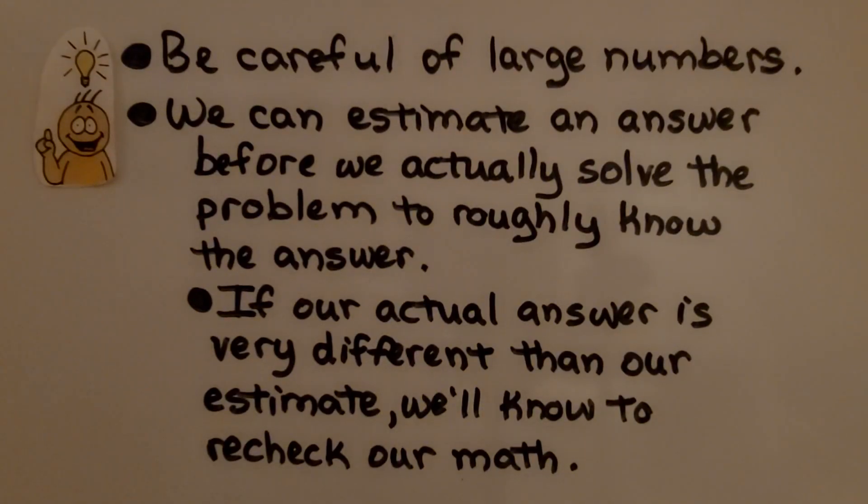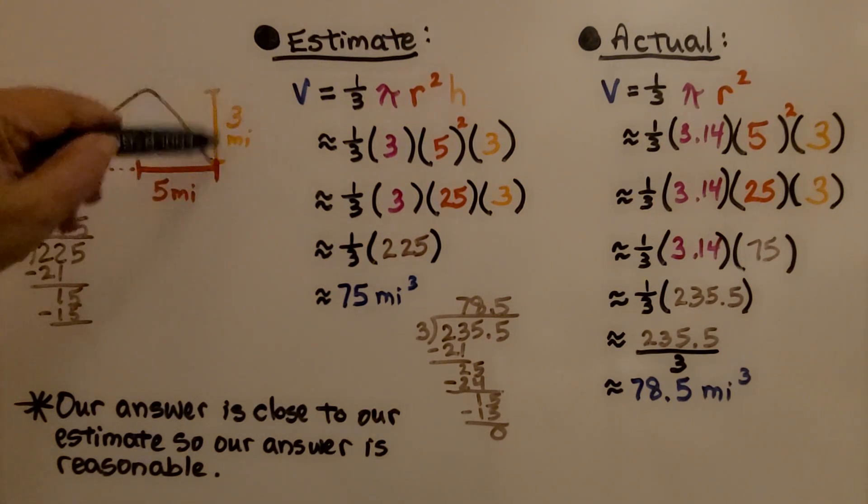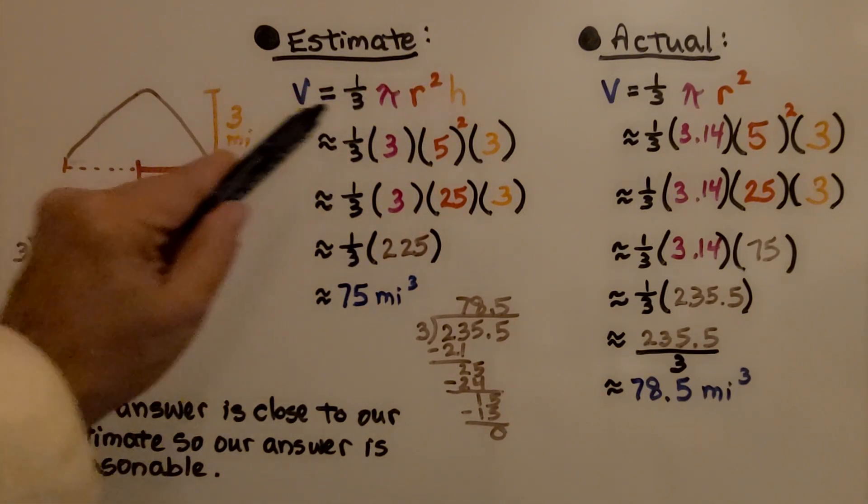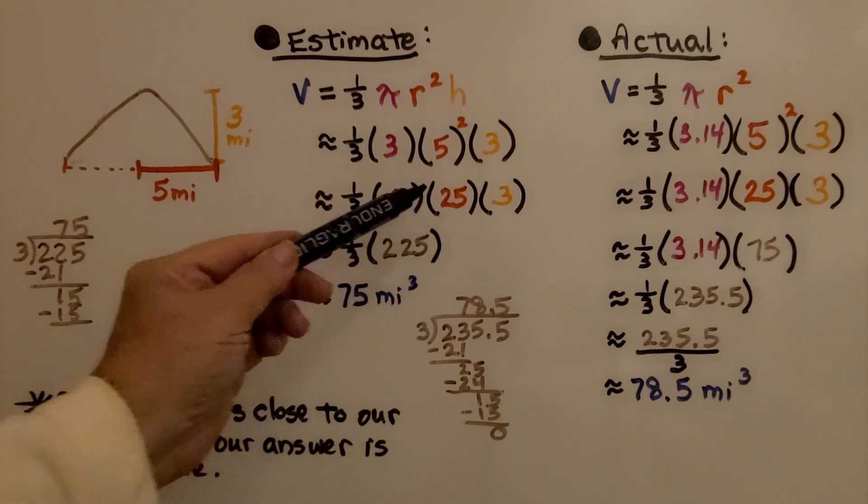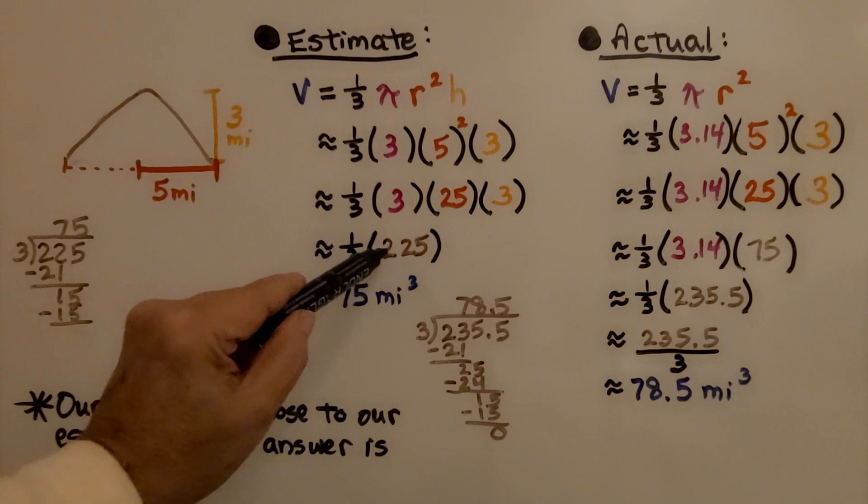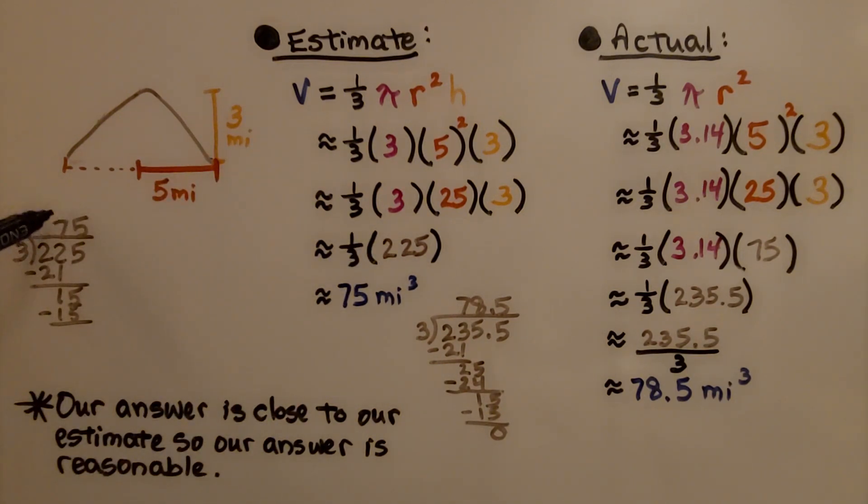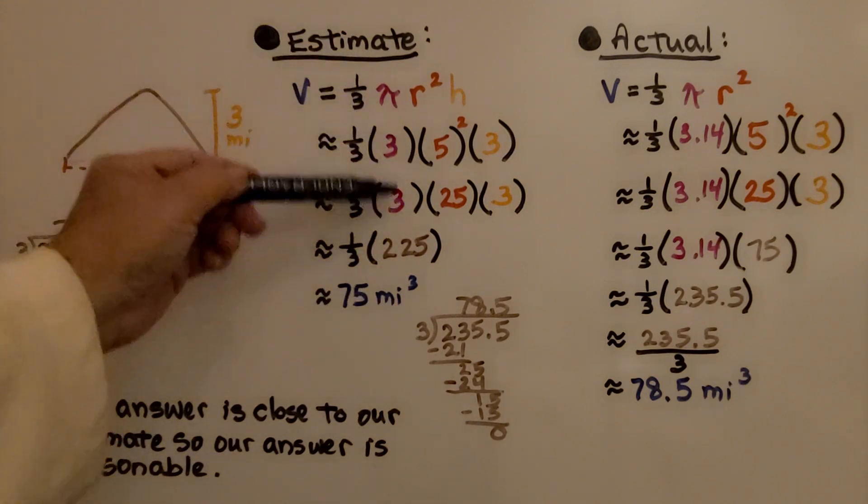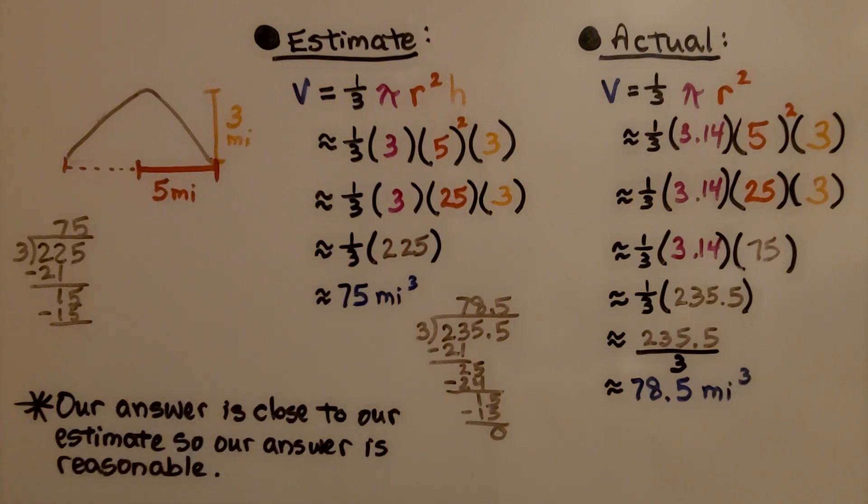Be careful of large numbers. We can estimate an answer before we actually solve the problem to roughly know the answer. If our actual answer is very different from our estimate, we'll know we need to recheck our math. So let's try doing an estimate. Our volcano has a radius of 5 miles and a height of 3. We can use the formula with radius squared. 5 squared is 25, multiplied by the height 3 gives us 75, and 75 times 3 is 225. We multiply 225 by one-third, or divide by 3, and we get 75. For the estimate, I didn't use 3.14, I just used 3 to go quickly with no decimals. The volume is about 75 miles cubed.